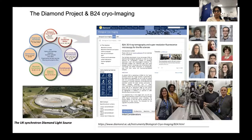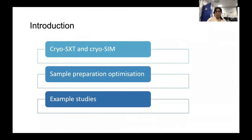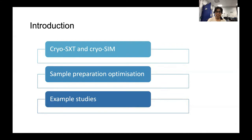Here on the slide you see lovely people working at B24. B24 has already been introduced to you in several of the presentations, so if you want to know more about B24, please visit Diamond's website. Here I will be briefly talking on two main techniques available at B24: cryo-SXT and cryo-SIM. Then I'll go through the workflow and explain how we have spent the last year in lockdown optimizing the sample preparation process to make it more user-friendly and easily reproducible.